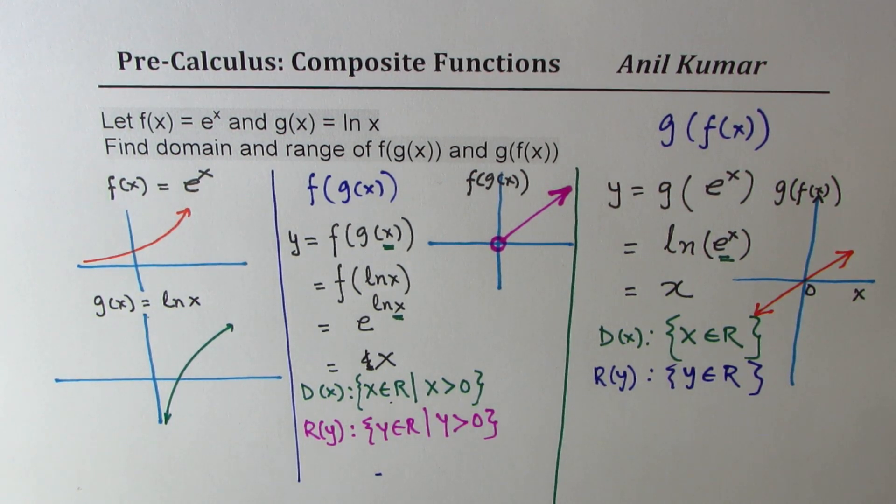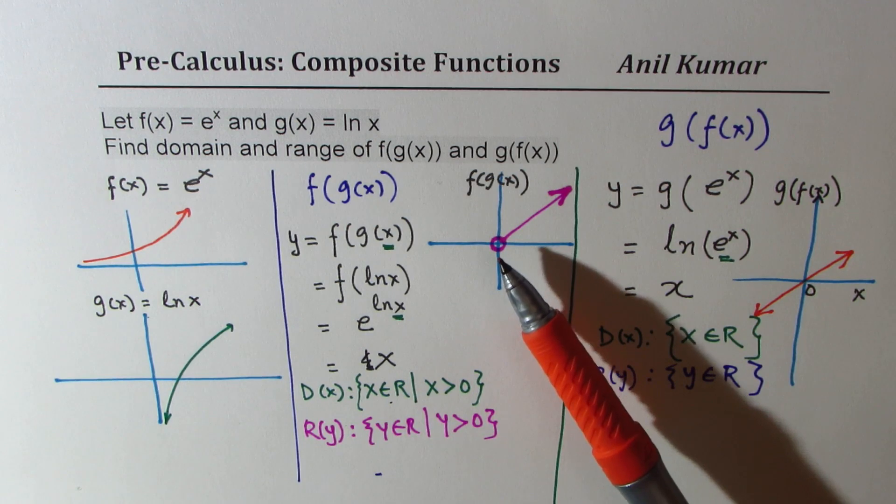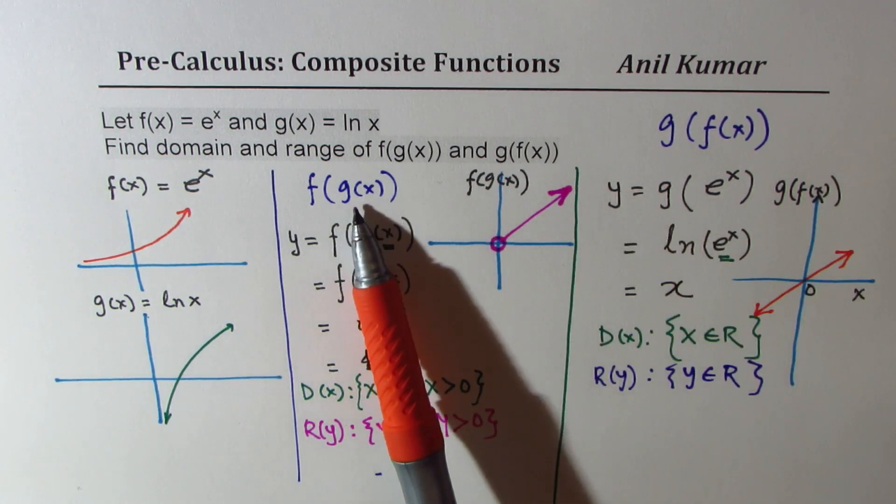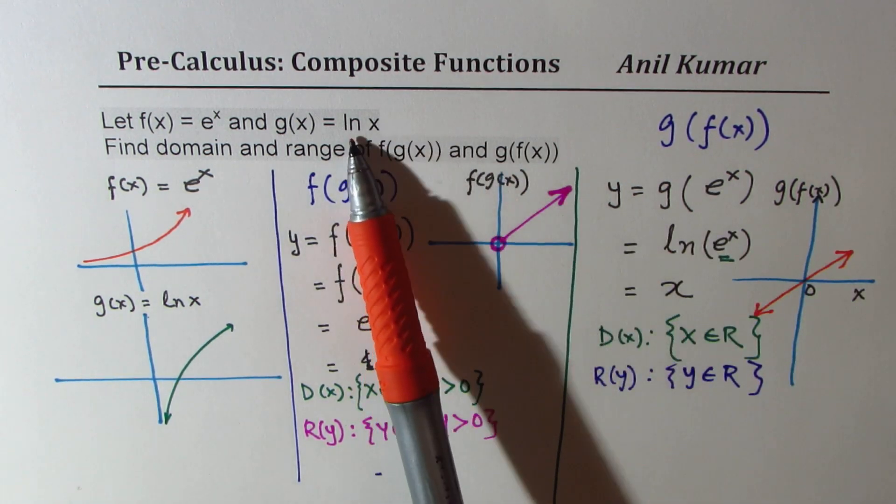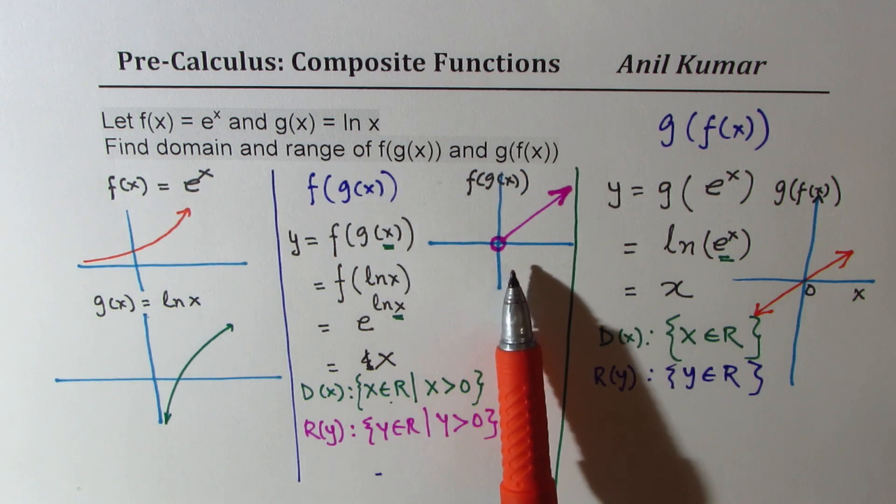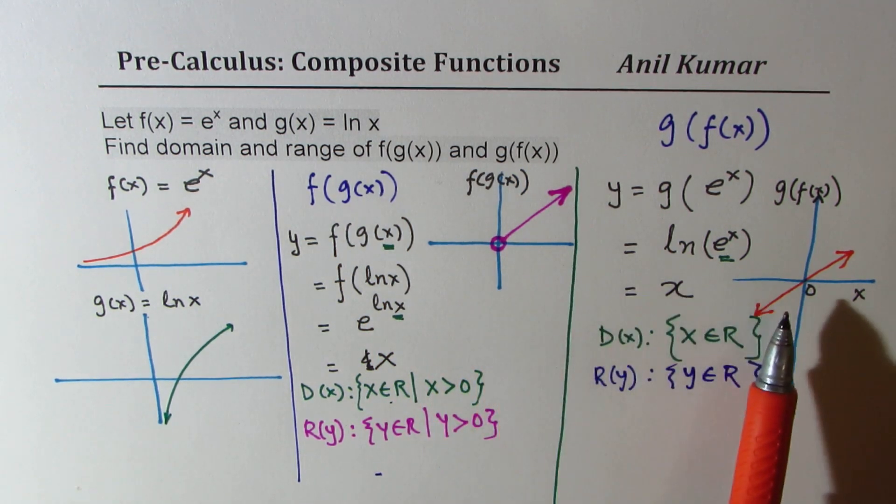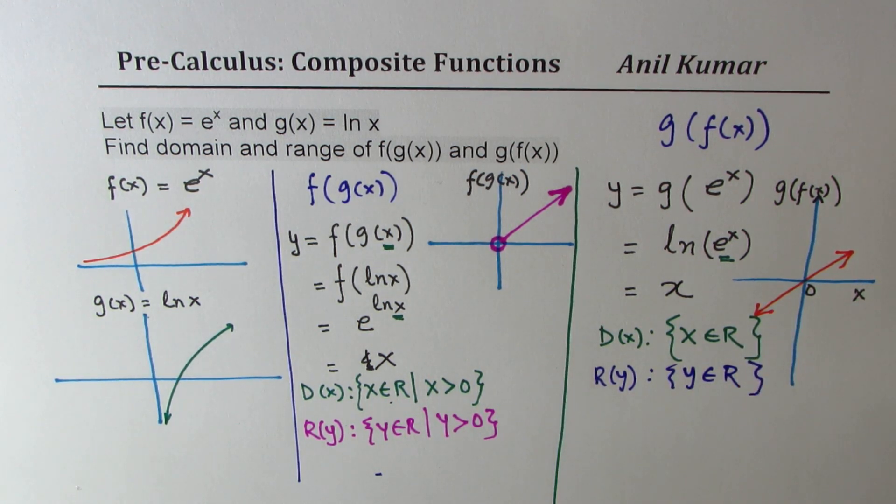So in one case, when the inside function has a restricted domain, we have composition with restricted domain. But if the inside function does not have that restriction, then we may not have that restriction on the whole thing. I hope that point is absolutely clear now.